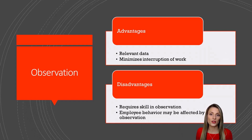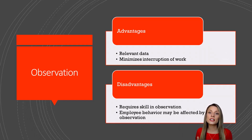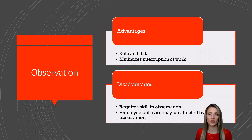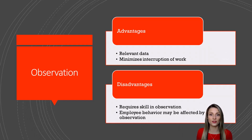One of the other challenges with observation is the Hawthorne effect — the tendency for people to behave differently when they know they are being watched. This tendency can impact the accuracy of the data we collect.